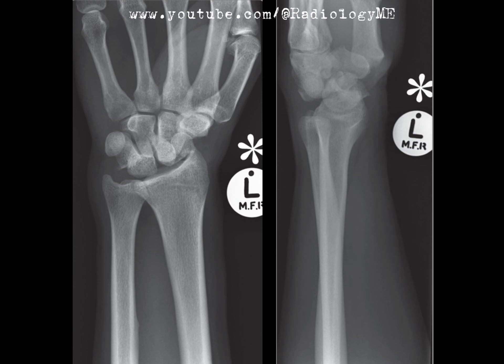Now, imagine you're in an FRCR exam and the examiner asks: what complications are associated with missed perilunate injuries? The answer you'd want to give is that missed injuries can lead to chronic wrist instability and early degenerative arthritis, both of which could severely impair hand function.